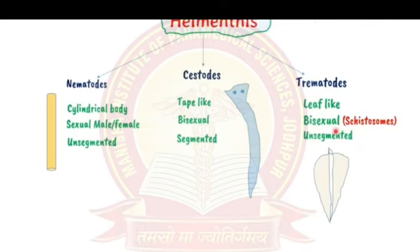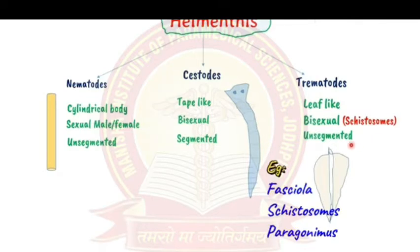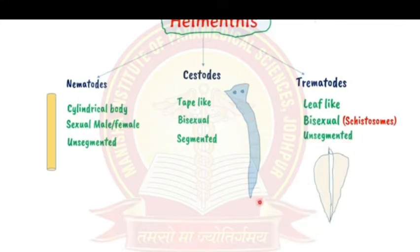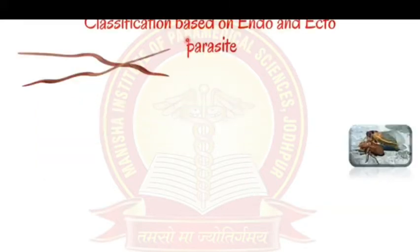Trematodes have a leaf-like structure and are bisexual — containing both male and female sexual organs in a single parasite — except for schistosomes, where male and female are separate. Trematodes are unsegmented. So, only cestodes are segmented with a tape-like structure — remember this carefully.